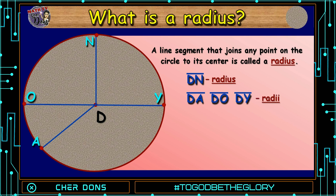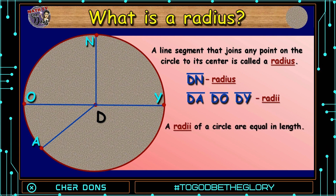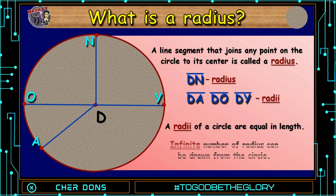So, radius is the singular term and radii is the plural term of radius. All radii of a circle are equal in length, and an infinite number of radii can be drawn from the circle.